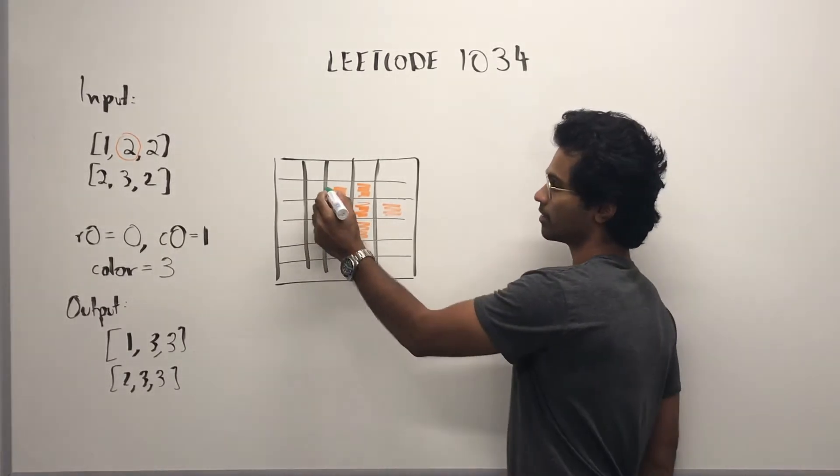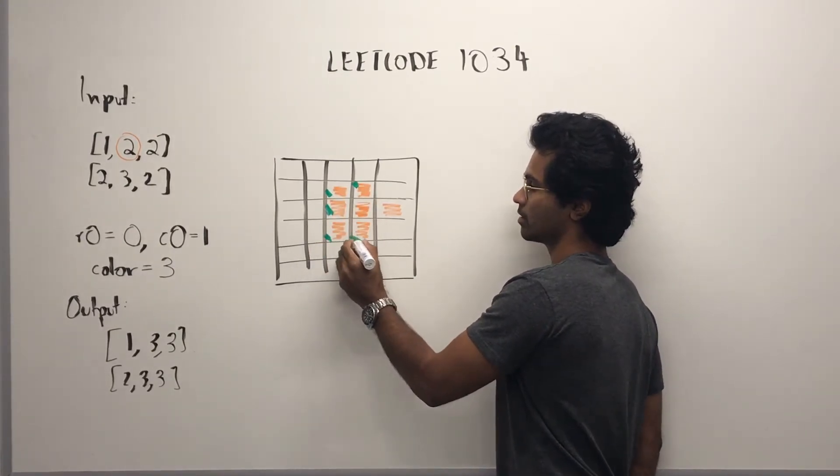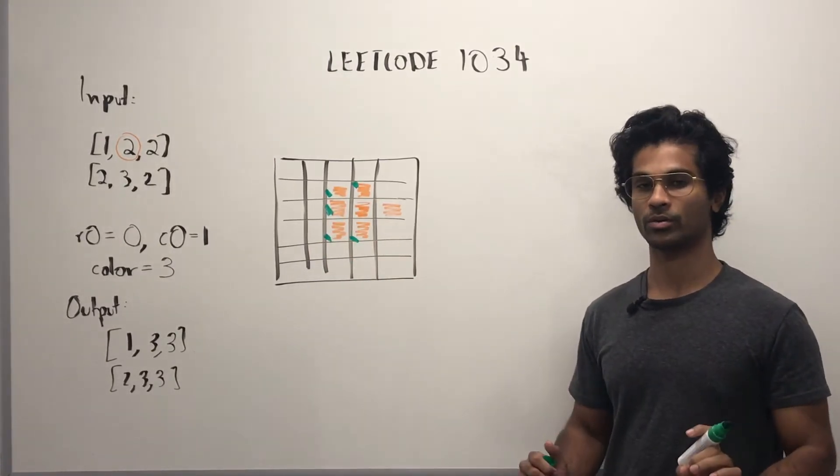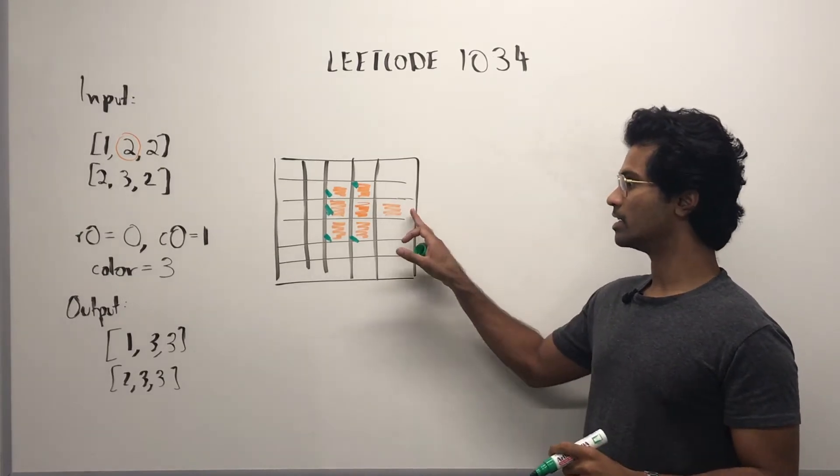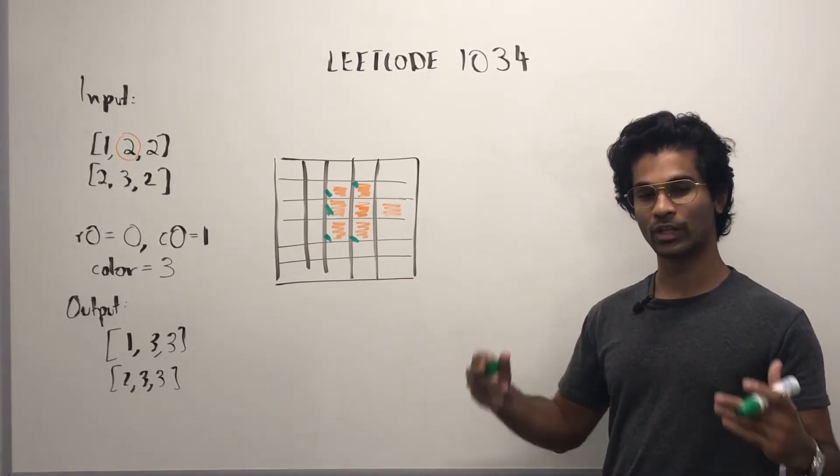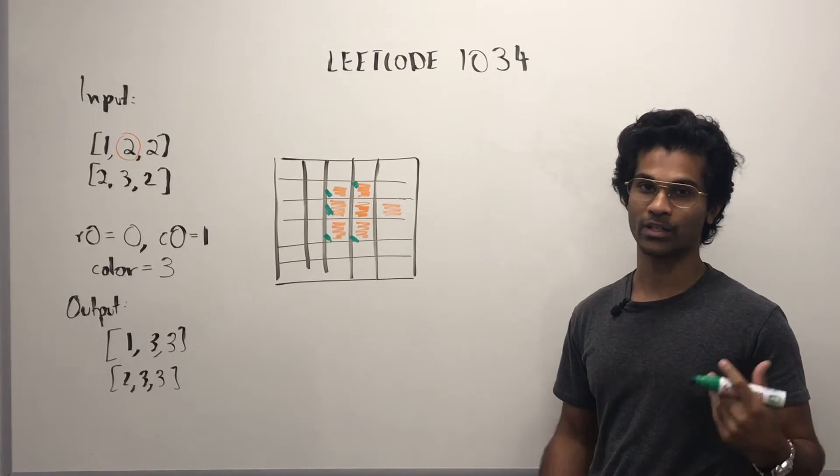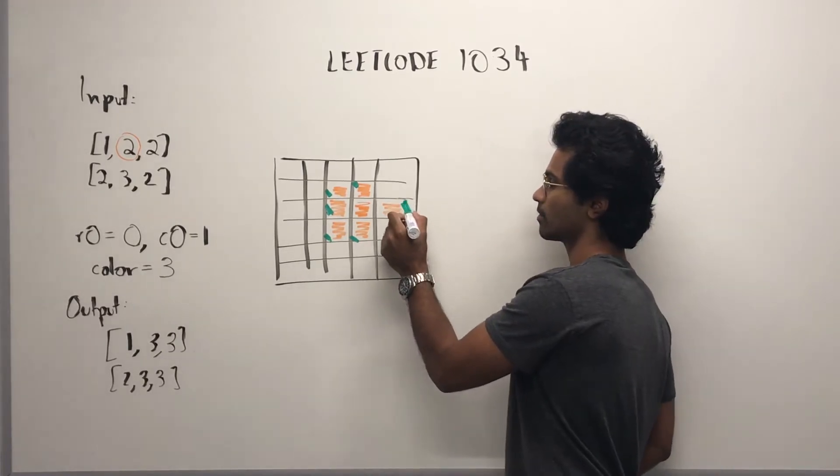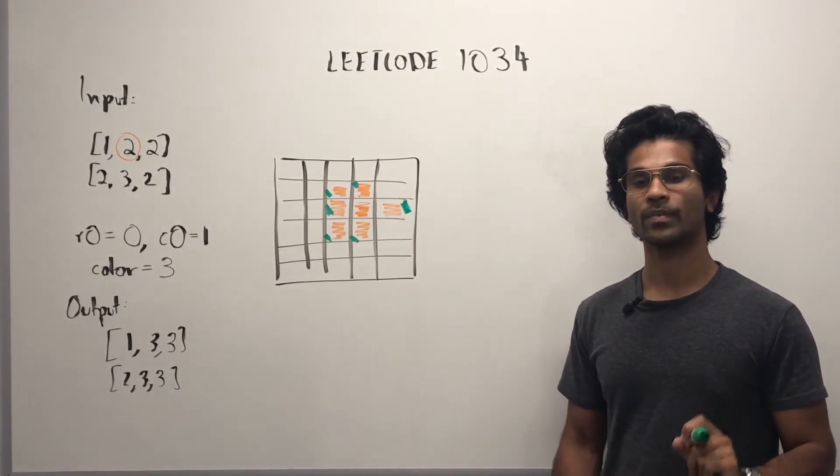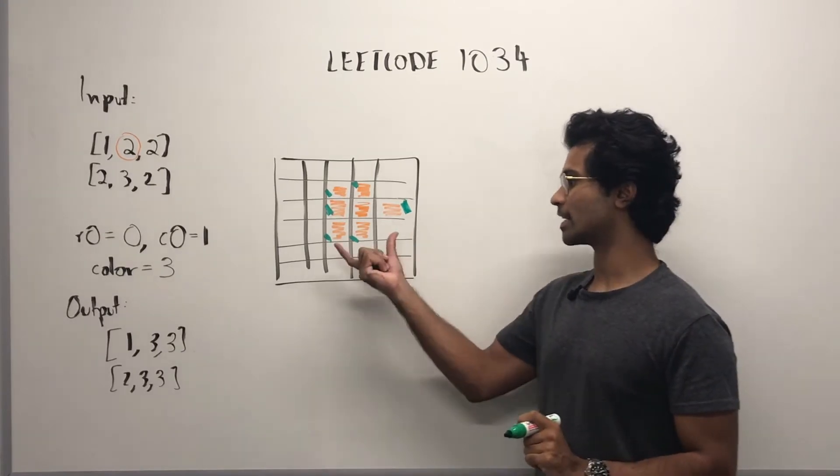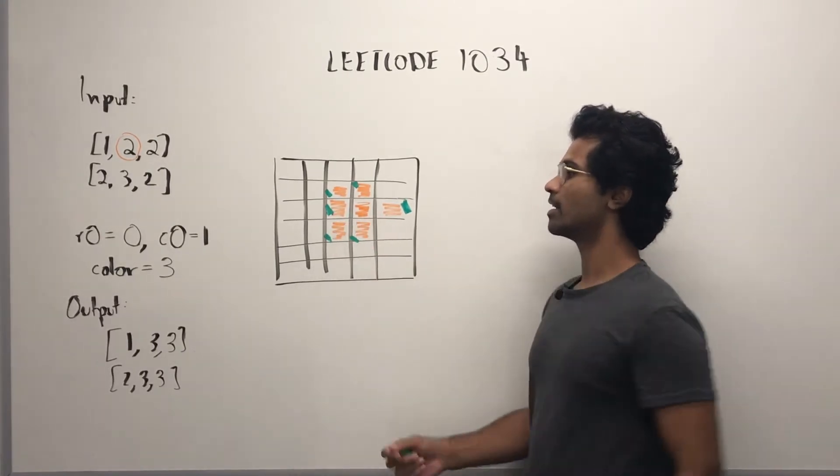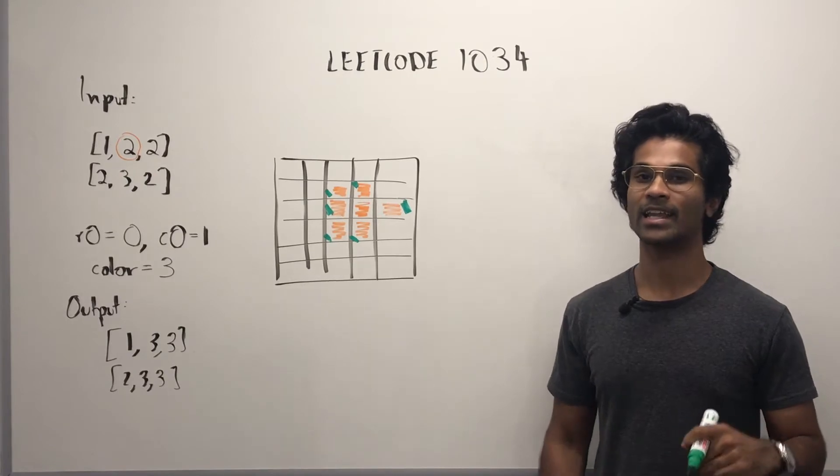Similarly, these are all border nodes. Now, this is on the edge of the grid, so we're going to color it as well. The only node whose color didn't change in this connected component is this. That's because it's an inner node.